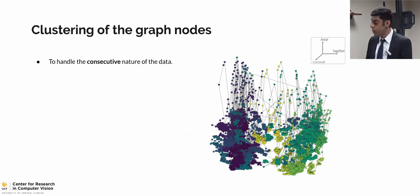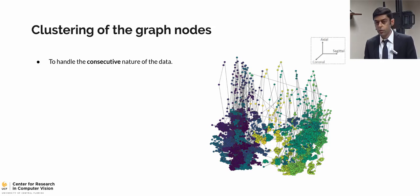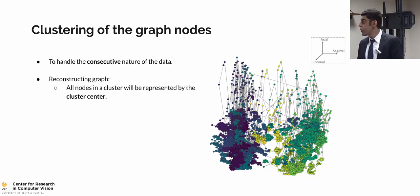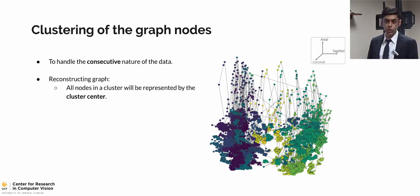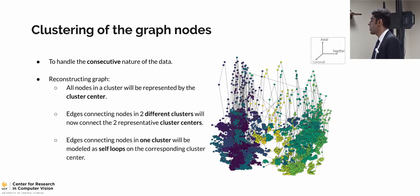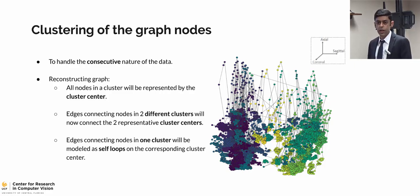We first start by clustering the graph nodes, which handles the consecutive nature of the graph. After applying nonparametric clustering on the nodes, we represent each cluster with the cluster center and reconstruct the graph as follows: all nodes connecting two nodes from two different clusters will now connect the centers of those two corresponding clusters, and all nodes connecting nodes inside each cluster will be modeled as self-loops. Both of these are used in defining the weights of the graph and how we define attention to extract ROIs.